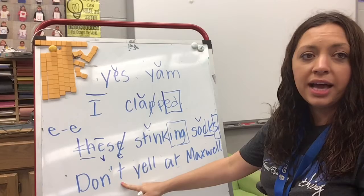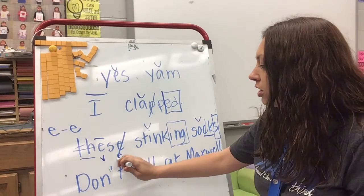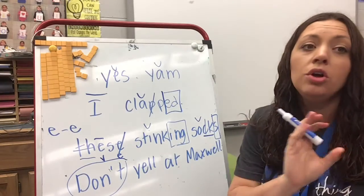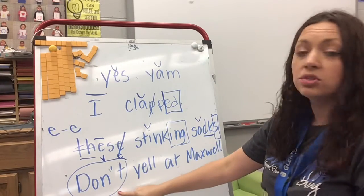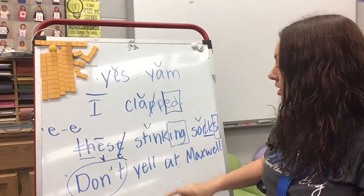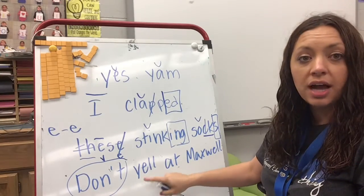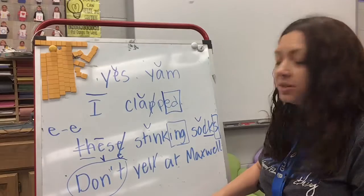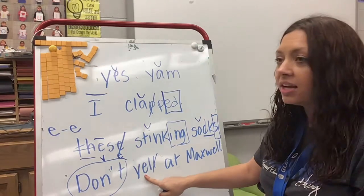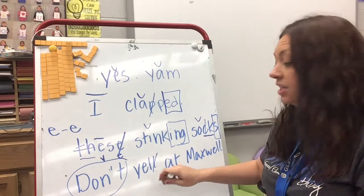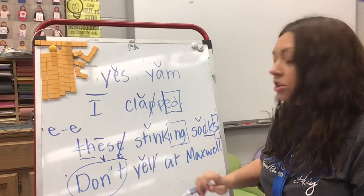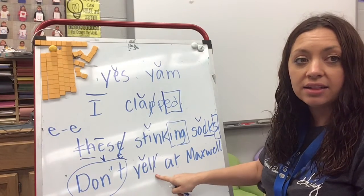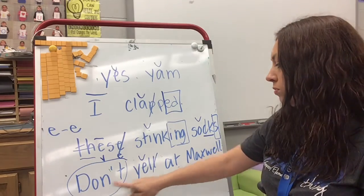Now down at the bottom we have our contraction, so I'm just going to circle it, because I know it doesn't follow a rule — I just have to read that word. And this word is don't. And then our next word — I have a double L so I can cross one of them off. I have a vowel that's in front of a consonant so I know it's going to be short. So I can sound out and say y-el: yell. So don't yell.